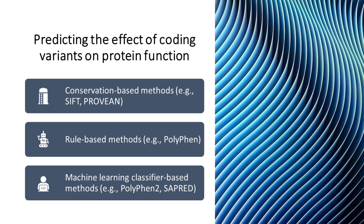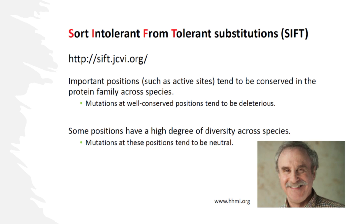These methods can be roughly divided into three categories: conservation-based, rule-based, and machine learning classifier-based. The best example of a conservation-based method is SIFT, for Sort Intolerant From Tolerant substitutions, published in 2001 by Stephen Henikoff and colleagues.